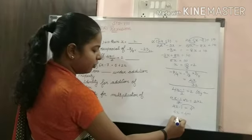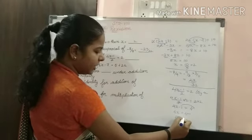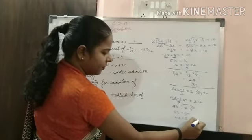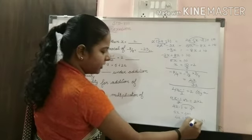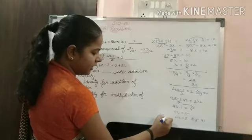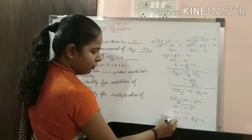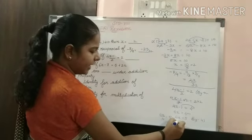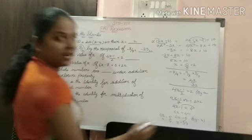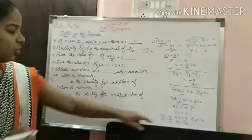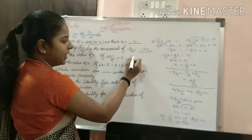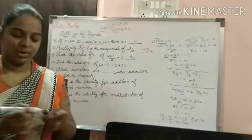So 4x is equal to 5. Now dividing both sides by 4: 4x by 4 is equal to 5 by 4. This cancels the 4 on the left, so x is equal to 5 by 4. That is the value of x. Understand, students.